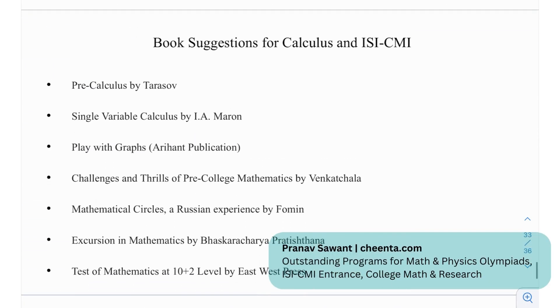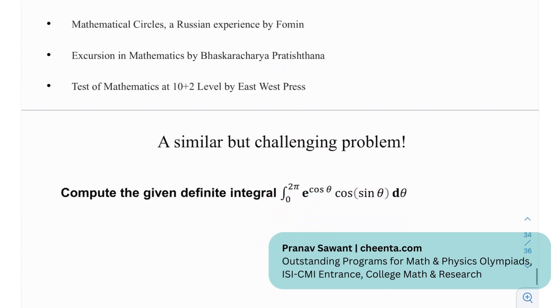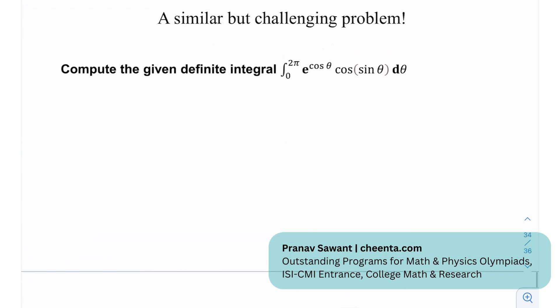Okay so coming on to certain book suggestions for calculus and ISI-CMI. We have Pre-calculus by Tarasov, Single Variable Calculus by Iamaron, Playing with Graphs, Challenges and Thrills of Pre-College Mathematics, Mathematical Circles: The Russian Experience, Excursion in Mathematics, and A Test of Mathematics at the 10 plus 2 Level.